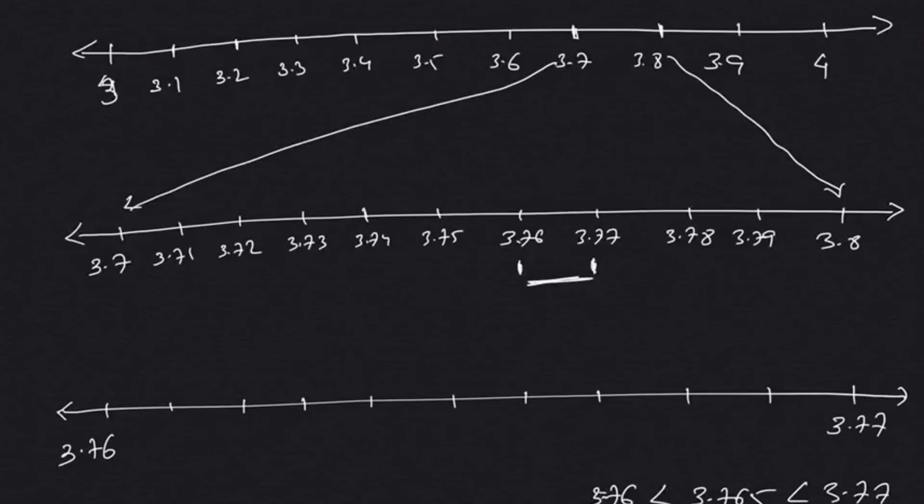So let's try to expand. That's going to be 3.761, 3.762, 3.763, 3.764, 3.765, 3.766, 3.767, 3.768, 3.769, 3.770.